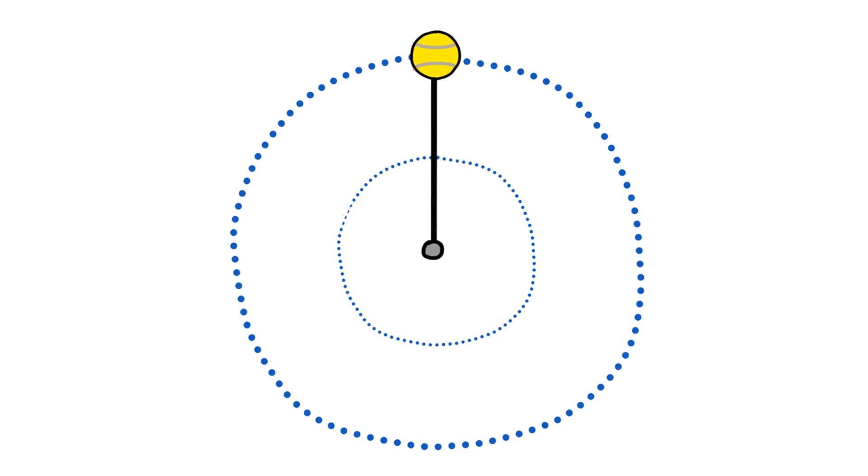But as we pull the ball to the smaller circle, its path becomes non-circular, and the tension suddenly points in the ball's direction of motion, causing it to speed up.